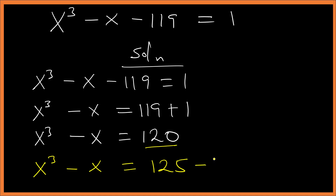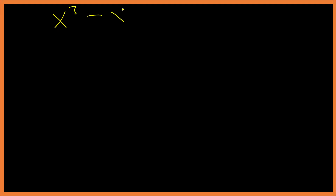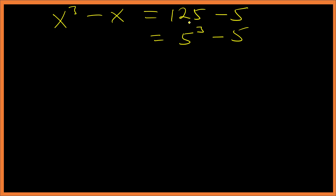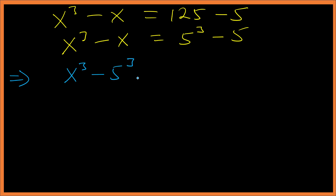Since 125 - 5 is the same as 120, I can write x³ - x = 5³ - 5, which means x³ - 5³ - x + 5 = 0.